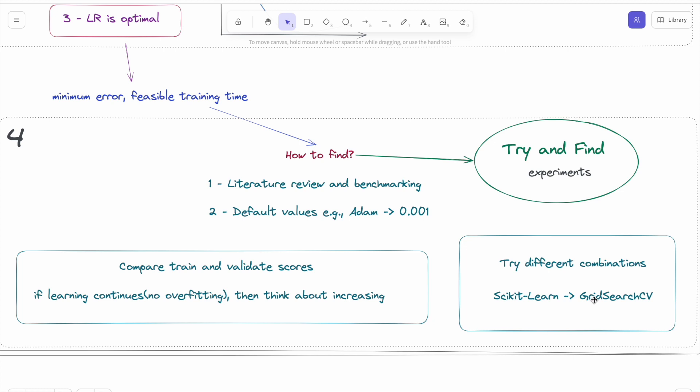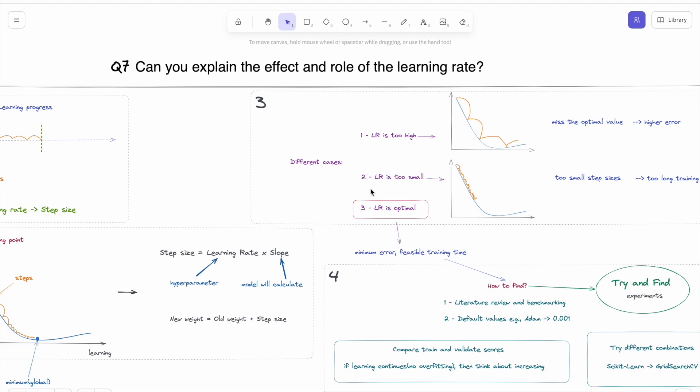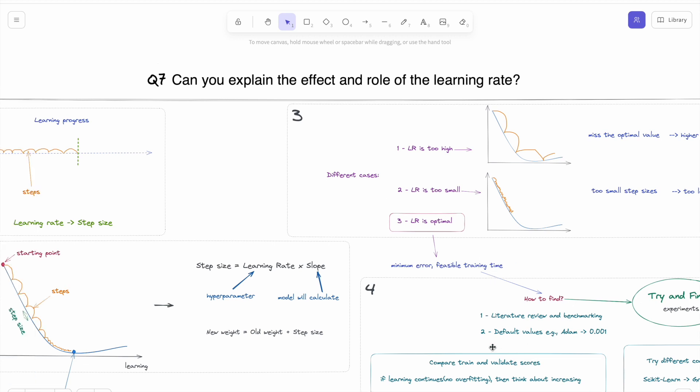Okay, that's all. We saw the role of learning rate, the effect of learning rate, and how we can find the best value for the learning rate. See you in the next question.